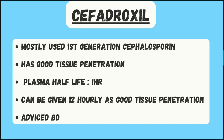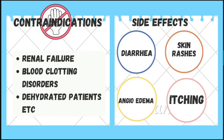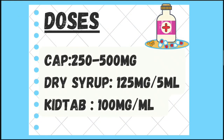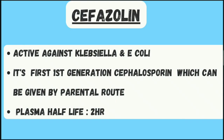Unlike cephalexin, which is prescribed three times a day, cefadroxil is advised two times a day. It is indicated in throat infections such as tonsillitis, urinary tract infections, and skin infections. The contraindications and side effects are the same as cephalexin. The dose in capsule form is 250 to 500 mg twice a day; in dry syrup, 125 mg per 5 ml; and in pediatric drops, 100 mg per ml.